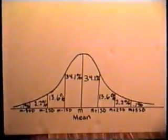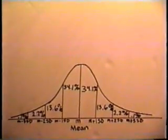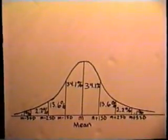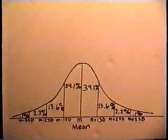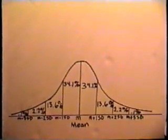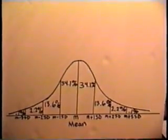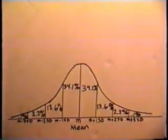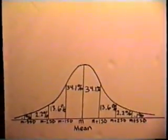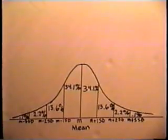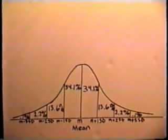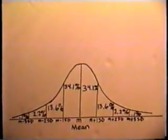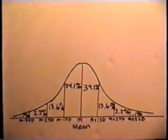Normal distribution is important for several reasons. First, many types of data tend to have approximately a normal distribution. The errors made in repeated, careful measurements are normally distributed, so that the normal distribution is used by scientists in the study of errors of observation.